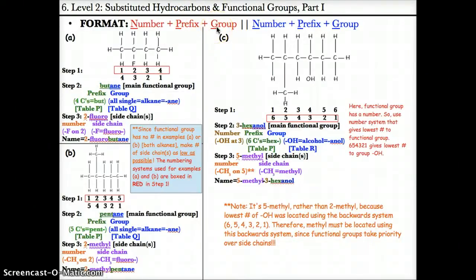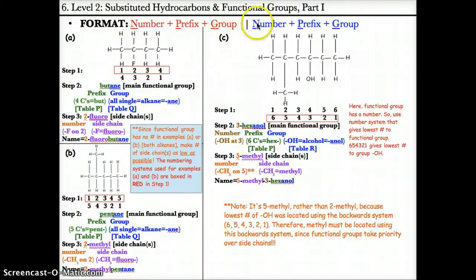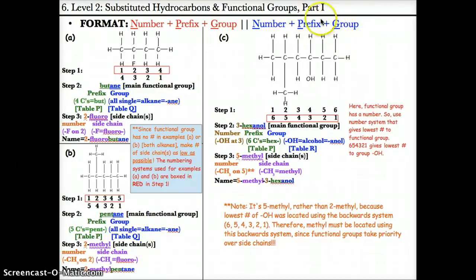Now let's discuss level 2: naming substituted hydrocarbons in functional groups. The format is number for location plus prefix (di/tri) plus side chain group ending (methyl, ethyl, propyl, fluoro, etc.) for the side chain, then number for location plus prefix from table P plus group ending from tables Q and R for the functional group in blue. Let's try this with some examples.